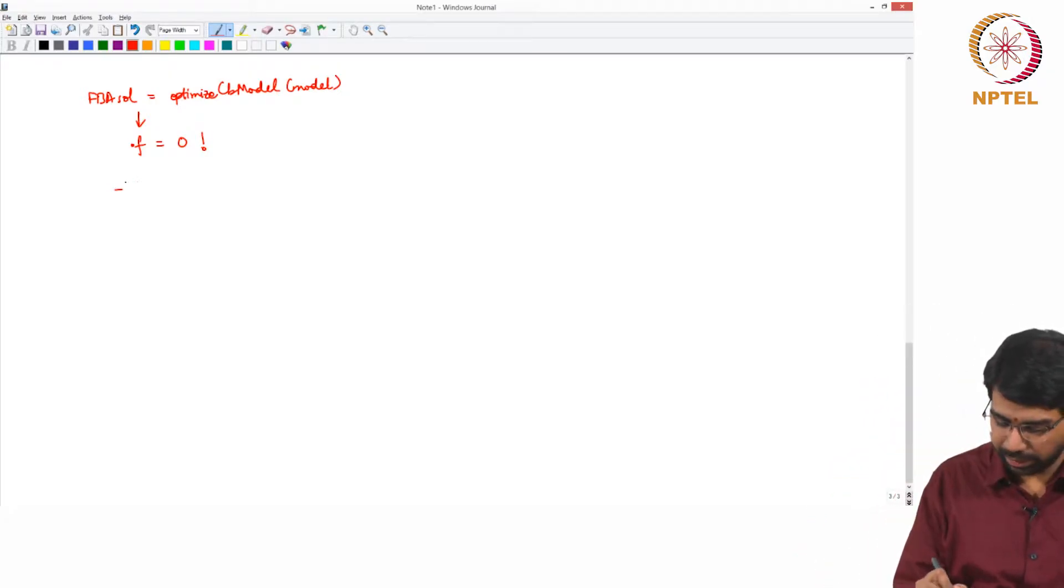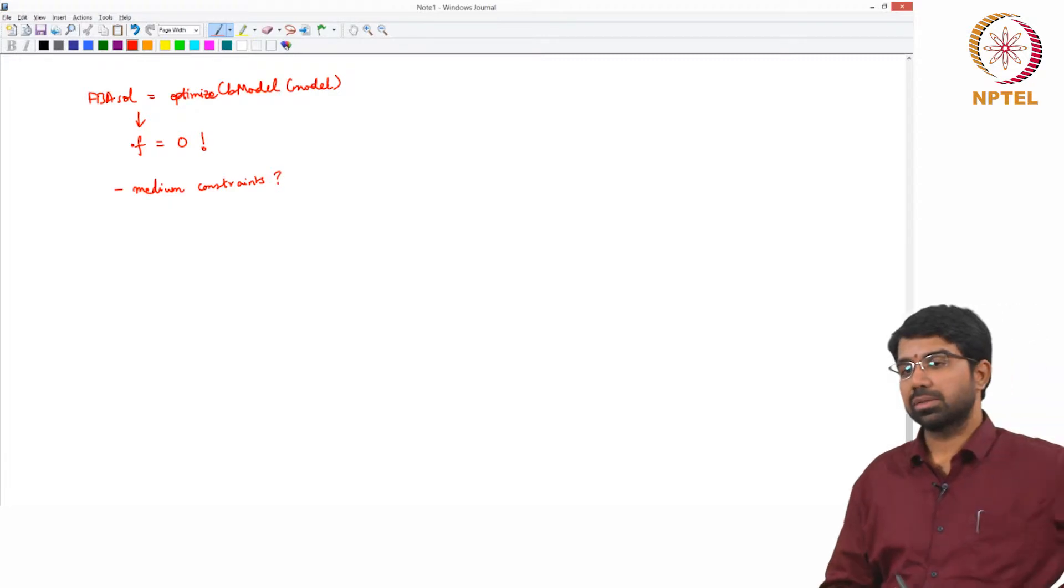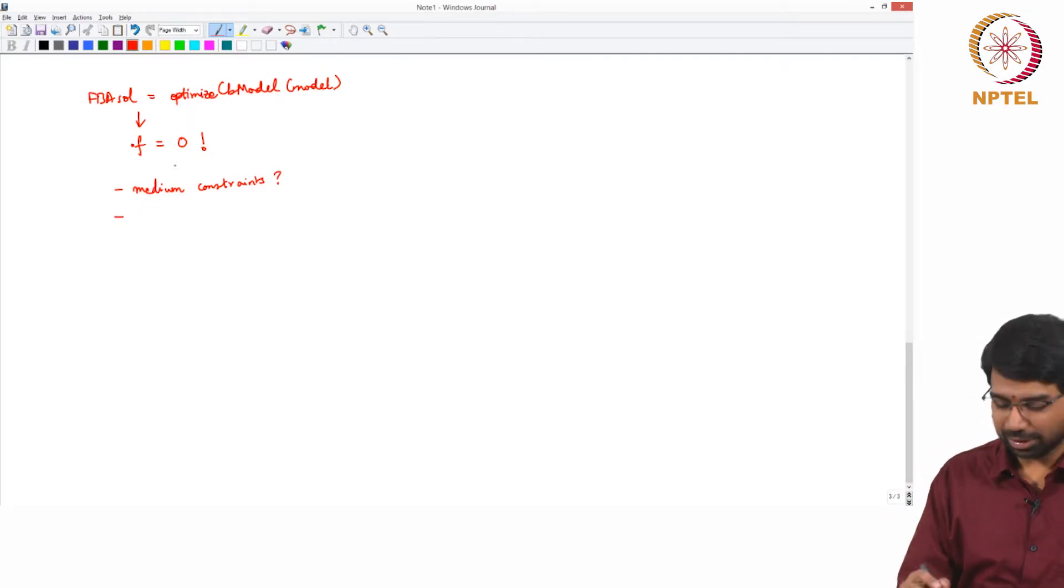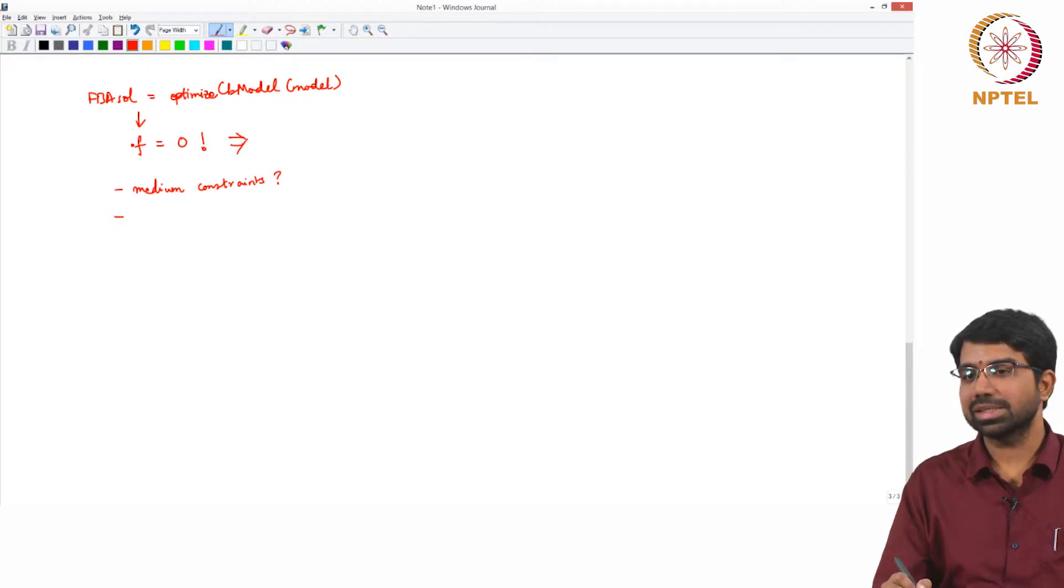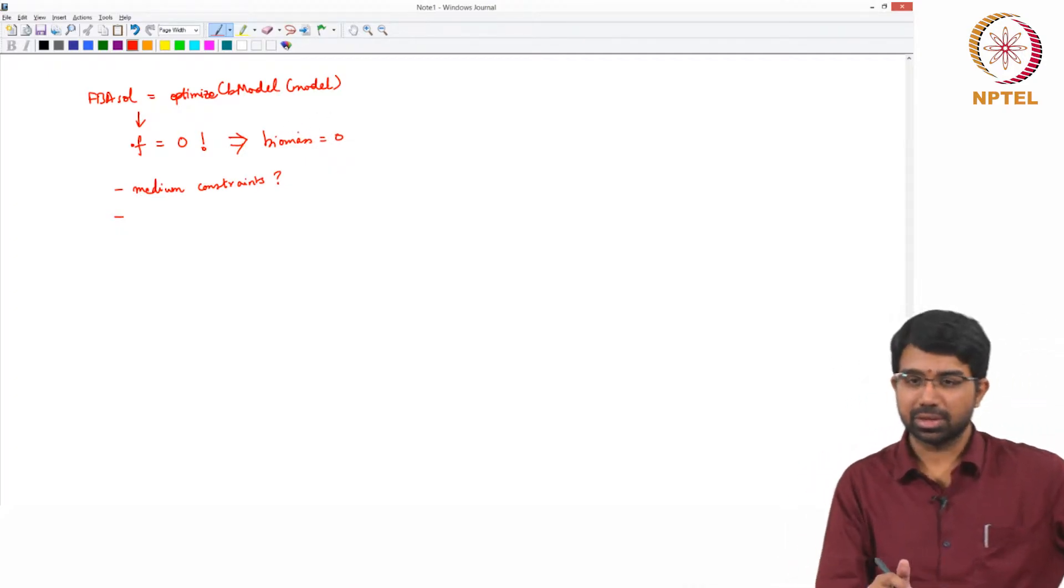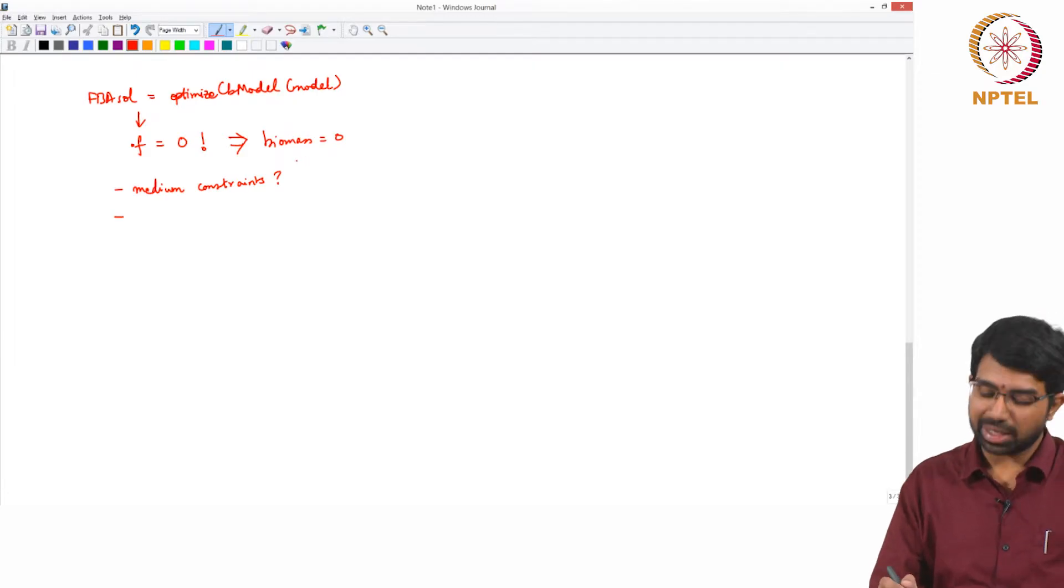So the first thing would be, are the medium constraints making sense or not? The obvious reason why this happens, immediate reason consequence of this, or this is an immediate consequence of the biomass reaction not being able to carry a flux. Why does the biomass reaction not carry a flux? That is what we are looking at essentially.